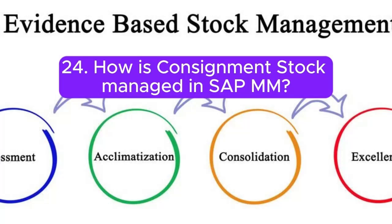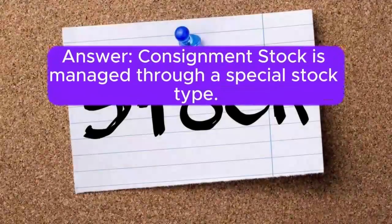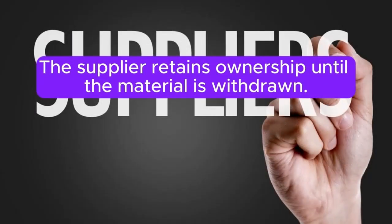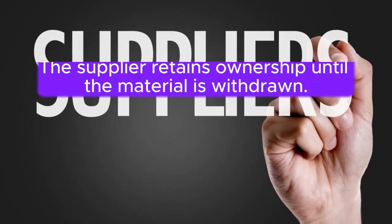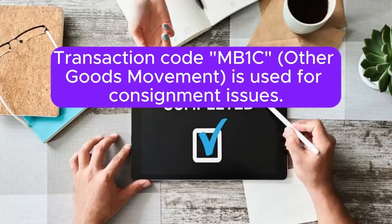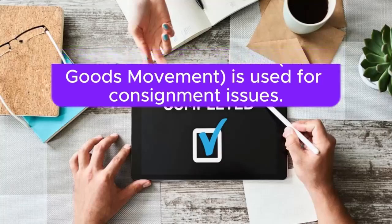Question 24: How is consignment stock managed in SAP MM? Answer: Consignment stock is managed through a special stock type. The supplier retains ownership until the material is withdrawn. Transaction code MB1C (Other Goods Movement) is used for consignment issues.